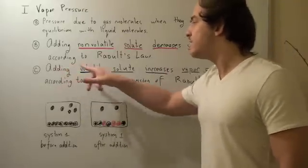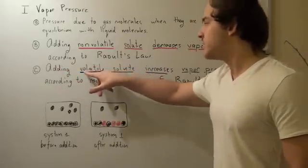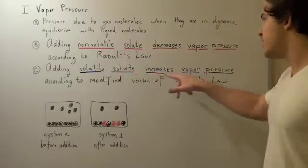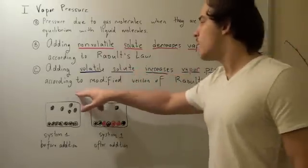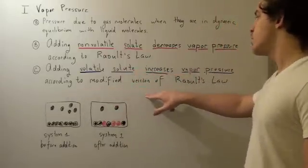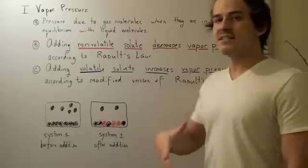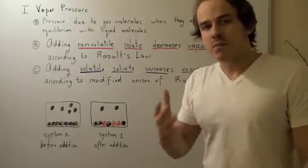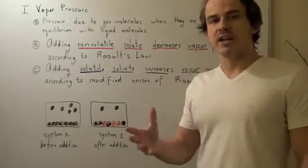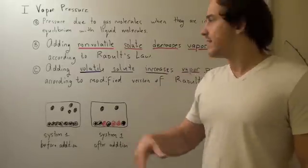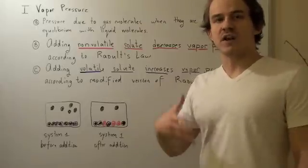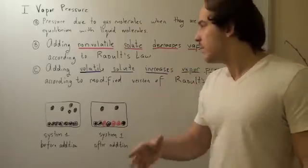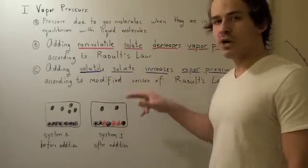Adding a volatile solute — molecules that do evaporate — increases vapor pressure, according to a modified version of Raoult's law. That's simply because now we have both the solvent molecules and the volatile solute molecules evaporating, so the final pressure is the sum of the two pressures.